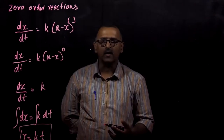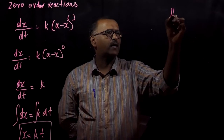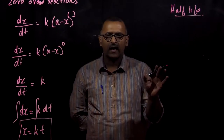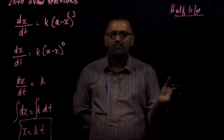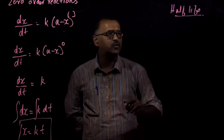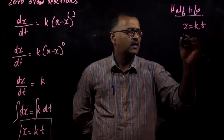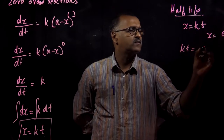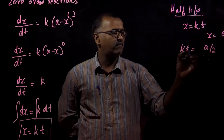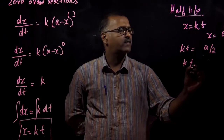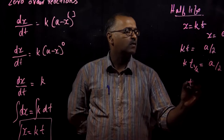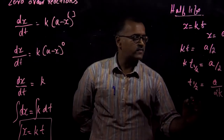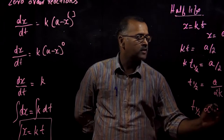In any kinetics, the next topic is the half-life of the reaction. Half-life is the time at which the initial concentration has been reduced to half of the initial concentration — meaning X equals A/2. Substituting into X equals Kt gives Kt½ equals A/2. This is an important relation showing that t½ is proportional to concentration A for a zero order reaction.